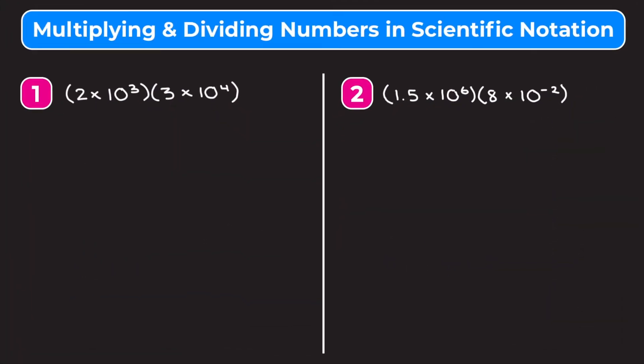In this video we're learning how to multiply and divide numbers that are written in scientific notation. Looking at example one, we have 2 times 10 to the third times 3 times 10 to the fourth. Now if you watched our video on adding and subtracting numbers in scientific notation, we typically start by changing both numbers to have the same power of 10.